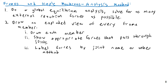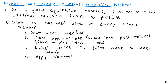When I say appropriate forces that pass through joints, I mean pin, roller, and fixed, etc. Make sure that if you have a fixed joint you're passing two directions of translational force and one moment through there. If you have only a roller joint, you're transmitting only a single perpendicular translational force through that joint. Also make sure that you're applying Newton's third law appropriately.